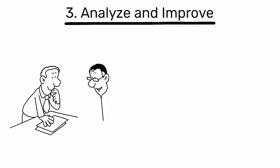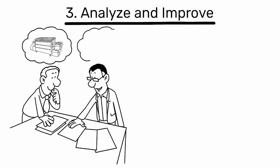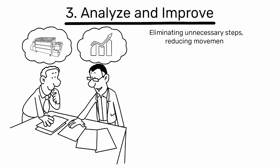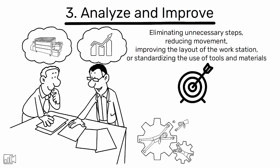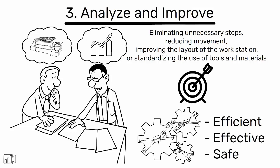3. Analyze and improve. Analyze the current process to identify waste and opportunities for improvement. This could involve eliminating unnecessary steps, reducing movement, improving the layout of the workstation, or standardizing the use of tools and materials. The goal is to create a process that is efficient, effective, and safe.